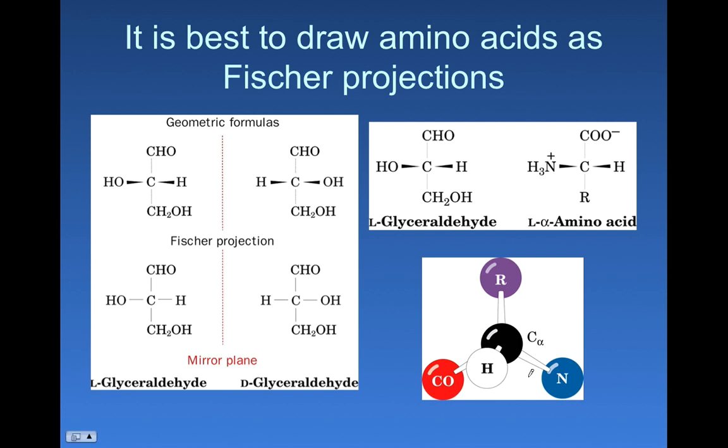Now, the CORN rule states that if you're looking at the alpha carbon with the hydrogen pointing at you, you should be able to spell CORN in a clockwise fashion if you're an L amino acid. So this is a little different from what we did in organic. When we were looking at a chiral carbon in organic, we always wanted that hydrogen or the fourth ranked substituent to be pointing away from us. So remember the CORN rule: we want this hydrogen to be pointing at us, and if we can spell CORN in a clockwise fashion, we have an L amino acid. If CORN is spelled in a counterclockwise fashion, it's a D amino acid, the non-naturally occurring one.